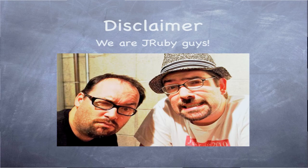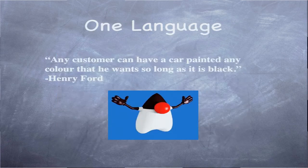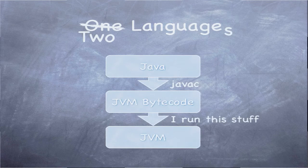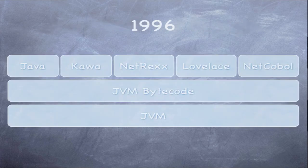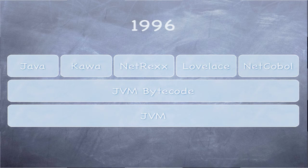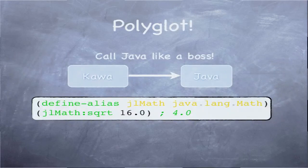Most people have the vision that Java is just one language. But actually Java was designed with two languages from the outset — you write something in Java, it compiles down to Java bytecode, and that's what the JVM knows how to run. That's not really polyglot unless you're mixing bytecode and Java directly. By mid-1996, there were several languages directly targeting Java bytecode, all knowing how to talk to Java well. So by 1996 we already had some form of polyglot in existence.